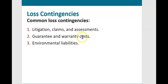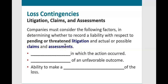The remainder of this video covers guarantee and warranty costs. Companies must consider several factors in determining whether to record a liability for pending or threatened litigation: the time period in which the issue took place, the probability of an unfavorable outcome, and the ability to make a reasonable estimate of the loss.